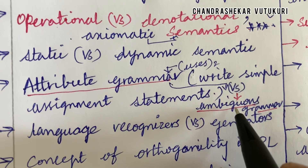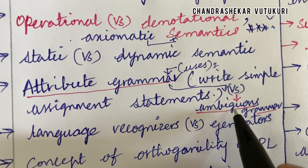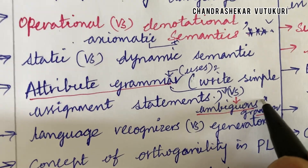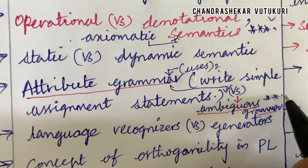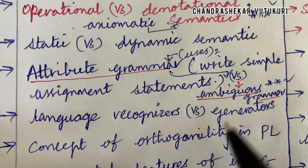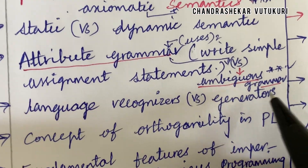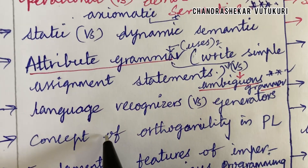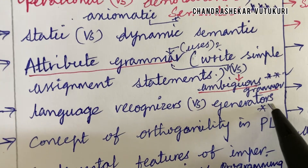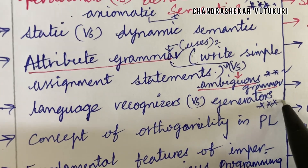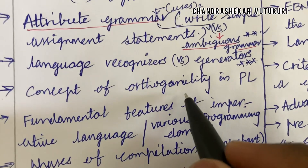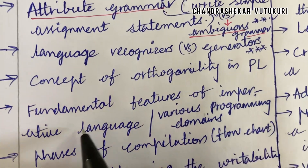Also, write simple assignment statements as well as attribute grammar versus ambiguous grammar, and check whether a given program is an ambiguous grammar or not. Language recognizers versus generators may also be a very important question.